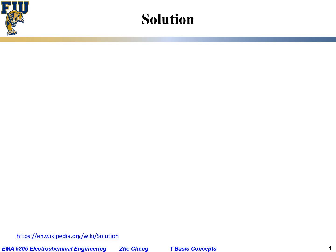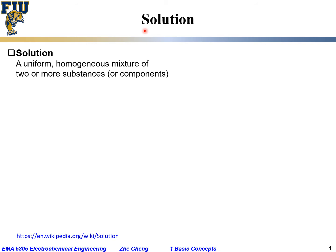For electrochemistry, one basic concept that we'll always use would be solution. Since we all left chemistry for a number of years, let's just refresh our minds on what a solution is. By definition, a solution should be a uniform, homogeneous mixture of two or more substances or components, so a solution typically cannot be a pure substance.